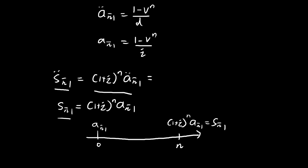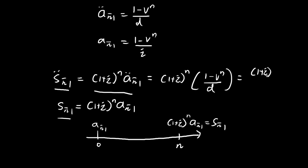I'm not going to prove this rigorously — you can use the geometric series argument yourself. Writing out the formulas, you'll see that the accumulated value equals (1 plus i) to the power of n minus 1, divided by d. This is very similar to the annuity immediate formula, where the accumulated value uses i in the denominator. Both formulas are almost identical except for the denominator.